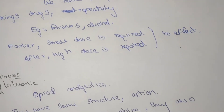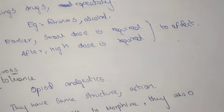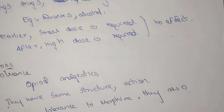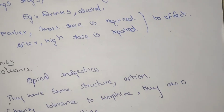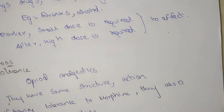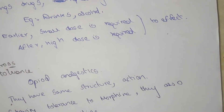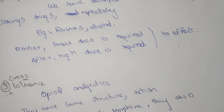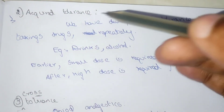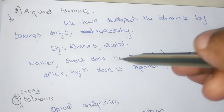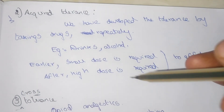With acquired tolerance, more milligrams of the tablet are required. For example, 2.5 milligram of diazepam produces eight hours of sleep normally, but after using the drug for several months, 5 milligram of diazepam only produces eight hours of sleep because the body develops tolerance against it. Alcohol and drinks are also examples of acquired tolerance — earlier small doses are required, but later higher doses are needed.